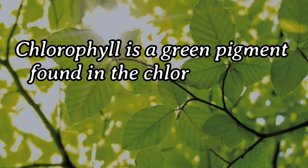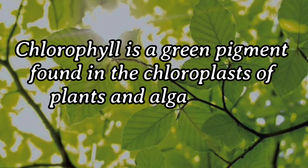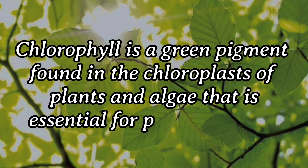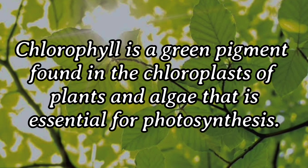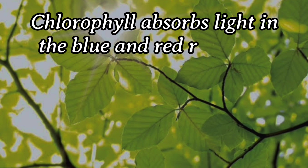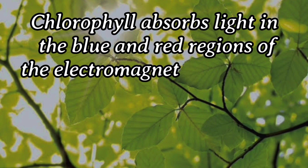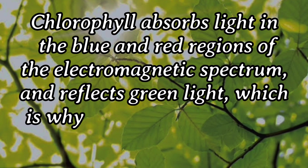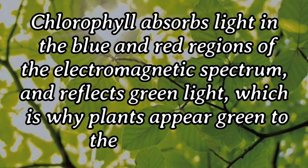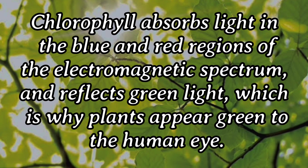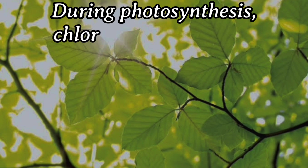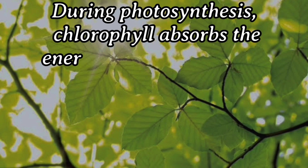Chlorophyll is a green pigment found in the chloroplasts of plants and algae that is essential for photosynthesis. Chlorophyll absorbs light in the blue and red regions of the electromagnetic spectrum and reflects green light, which is why plants appear green to the human eye.